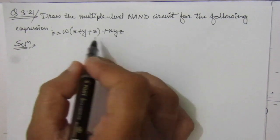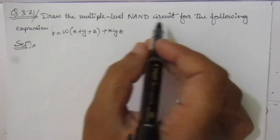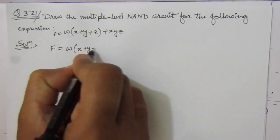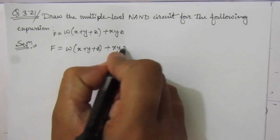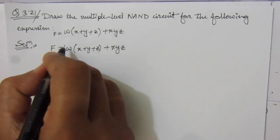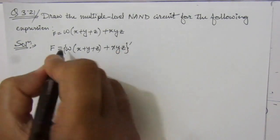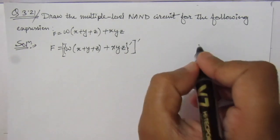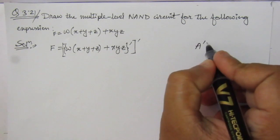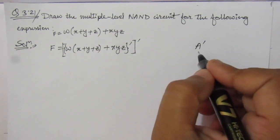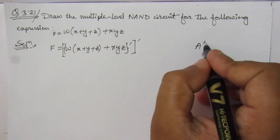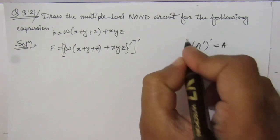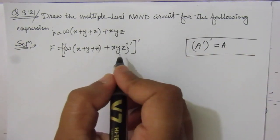Let us first express this expression so that we can implement it using a NAND circuit. The function is f = (w · (x + y + z) + xyz). If we take the double complement — one time and a second time — the function remains the same, because taking the complement of A twice gives back A. That is why we are taking two times complement here.